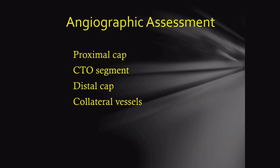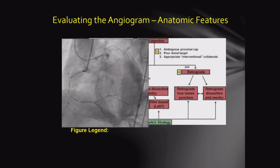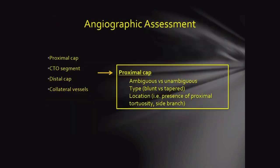What are the things we should look for while doing angiogram in CTO? Number one: proximal cap; number two: CTO segment; number three: distal cap; number four: collateral vessels. We all know the common algorithm for doing CTO — you have to know whether the proximal cap is ambiguous or non-ambiguous, know the distal cap and target vessel, identify appropriate interventional collaterals for retrograde, and assess lesion length.